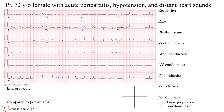Welcome to the EKG Guy. We are back at EKG of the week and we have a 72-year-old female with acute pericarditis, hypotension, and distant heart sounds. Here's her EKG.